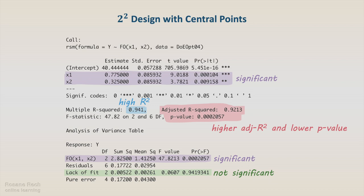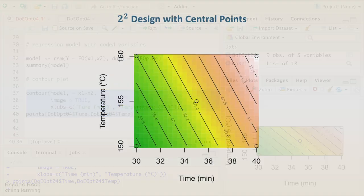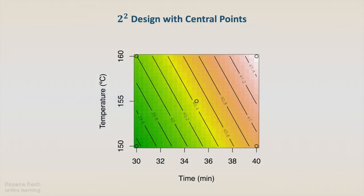As the final step, let's build the contour plot for the model as a function of x1 and x2, the coded variables.